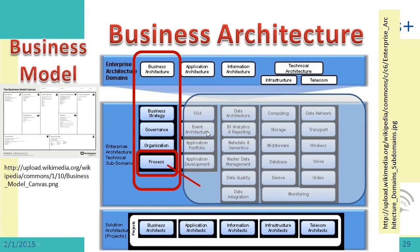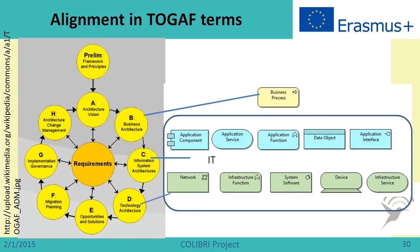Here we have a process, and if we are building enterprise architecture, we can see how this process is related to elements of information technology. Another way to talk about alignment between business and IT, and how enterprise architecture supports it, is looking from the point of view of TOGAF architecture. Here we will see that there is our business process, which belongs to the business architecture level, and there are information technology issues, which belong to the information systems architecture level and technology architecture level. Remember, in the introductory part, we called this the application level.